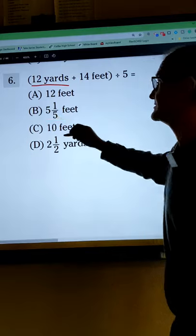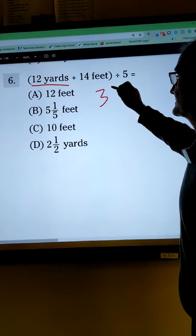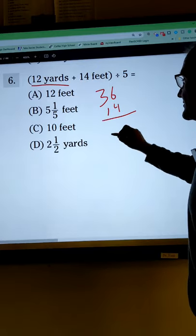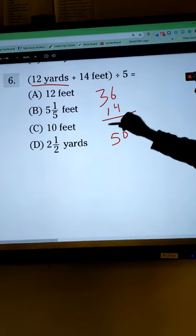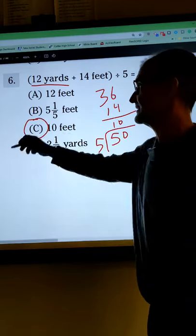So I'm going to take that 12 yards and convert it into feet. Three feet to the yard, so I have 36 feet plus 14 feet, gives me a total of 50 feet, divided by 5 is 10. So there's the answer right there.